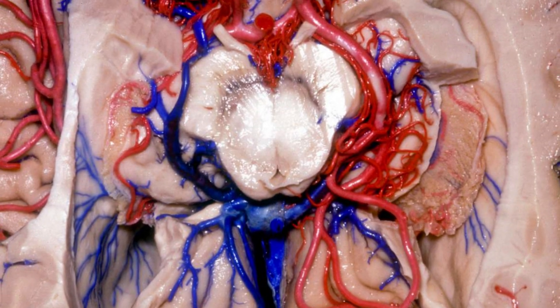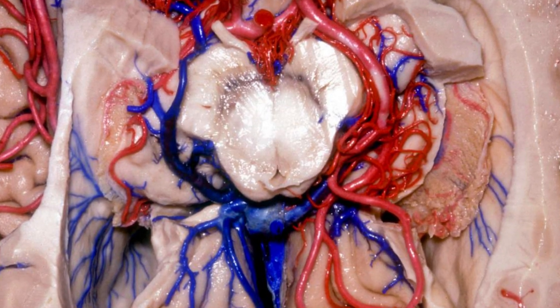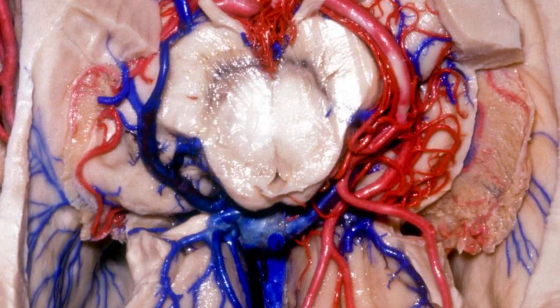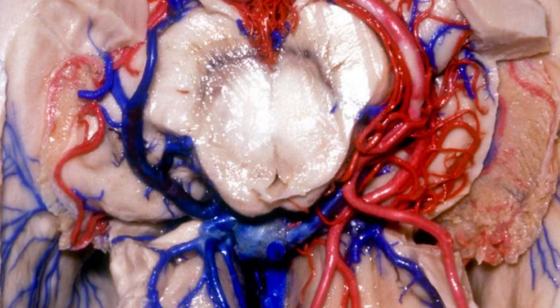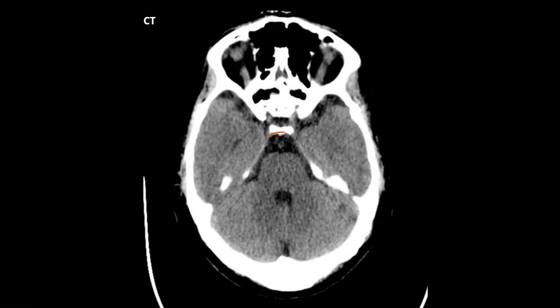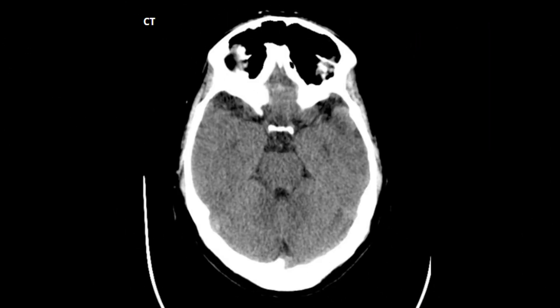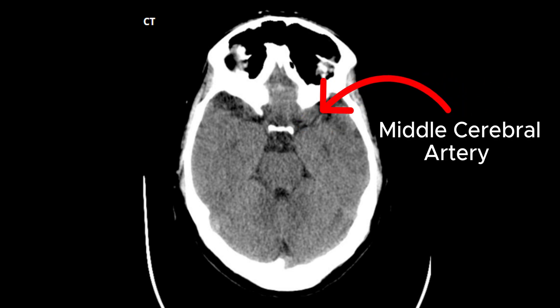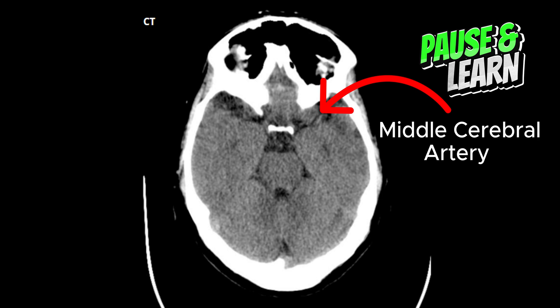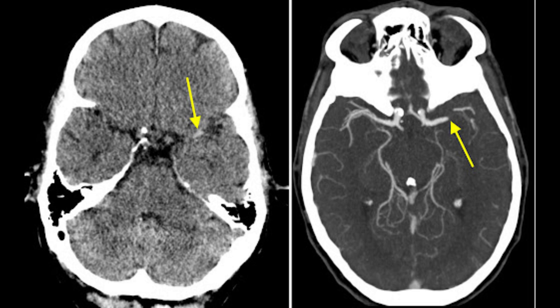As we discussed in the previous video, blood vessels lie safely in these cisterns, and sometimes these vessels can be visualized on a good quality CT scan. The basilar artery appears as a dot-like structure in the peripontine cistern. The MCA, or middle cerebral artery, can be seen in the sylvian cistern as a white linear structure. Here is another image showing the MCA.